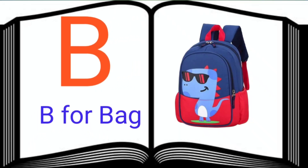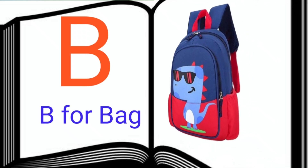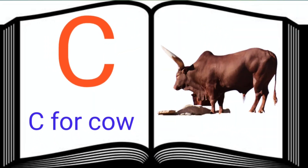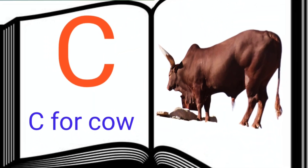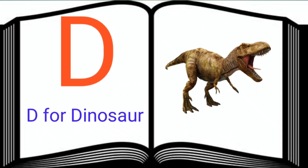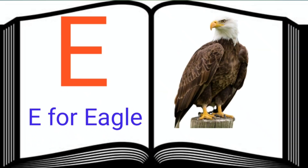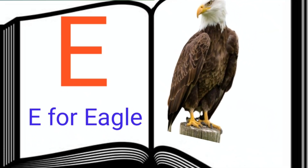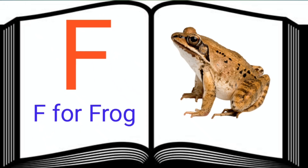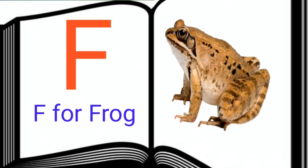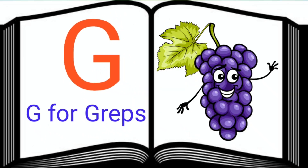B. B for Bag. C. C for Cow. D. D for Dinosaur. E. E for Eagle. F. F for Frog. G. G for Grapes.